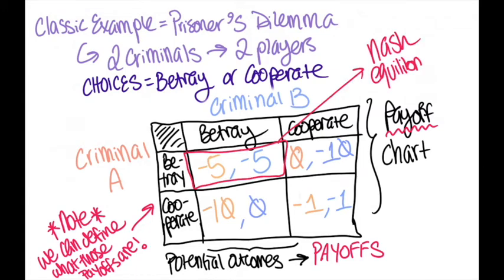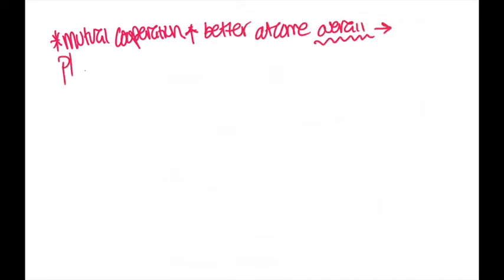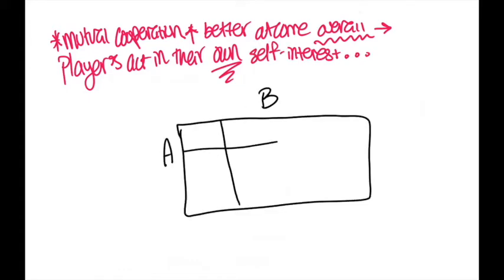The Nash Equilibrium for this example is for both players to betray each other. Even though mutual cooperation leads to a better outcome for everyone overall, the players are unaware of the other prisoner's choice and so care only about their own choices and their respective payoffs.